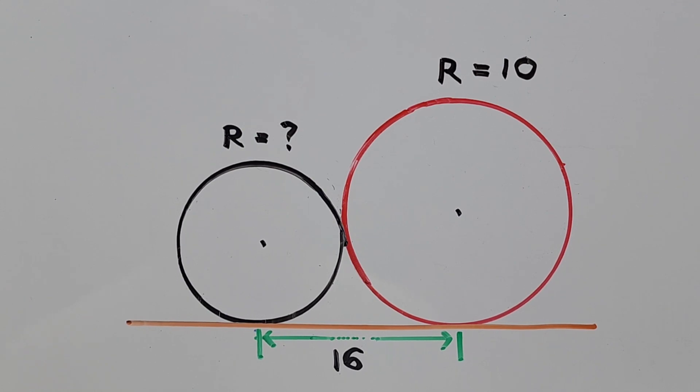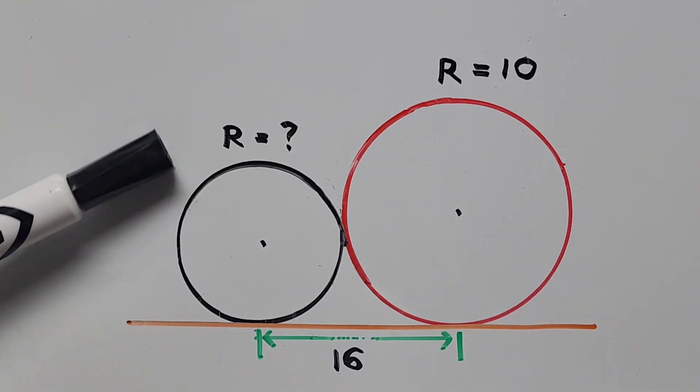In this video we have two given tangent circles, with the radius of the bigger circle as 10 units, and the distance of point of tangency between these two circles is 16 units. We're going to solve for the radius of the smaller circle.